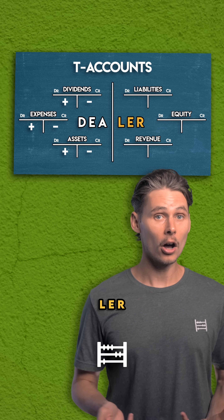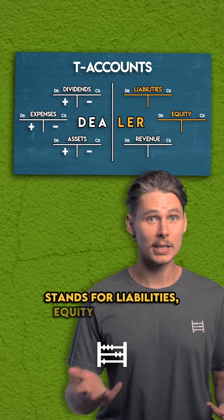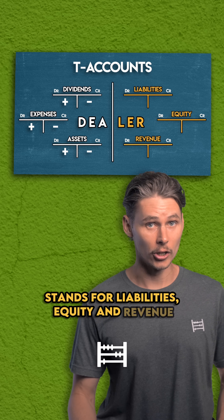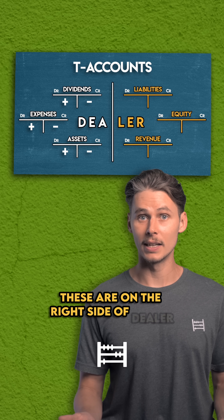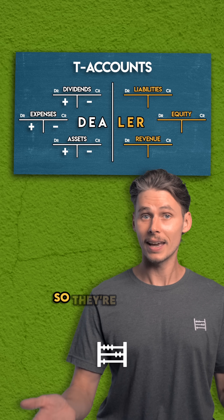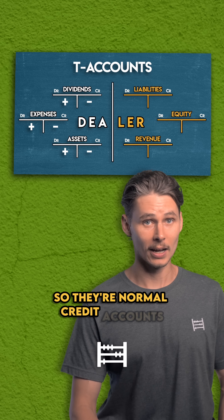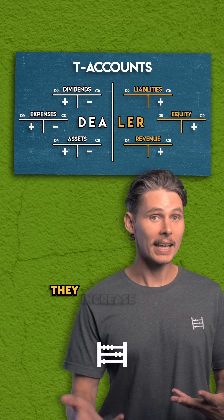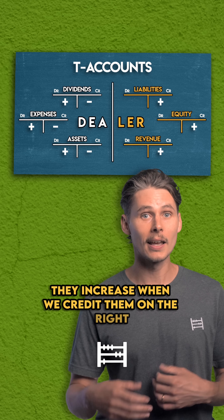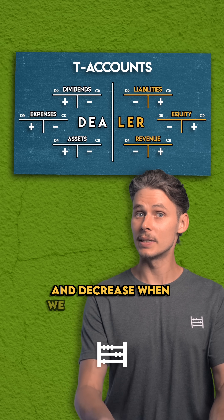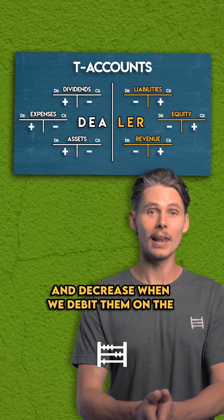LER stands for Liabilities, Equity, and Revenue. These are on the right side of DEALER, so they're normal credit accounts. They increase when we credit them on the right and decrease when we debit them on the left.